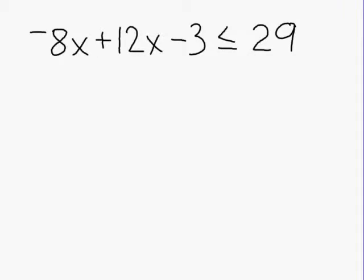When solving inequalities, it is a good idea to simplify any part of your inequality before isolating the variable to see what values would satisfy it. Because we have two x variables, we are going to combine those together since they are like terms. Negative 8x and positive 12x give us a result of positive 4x.